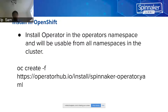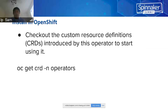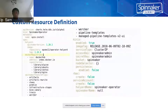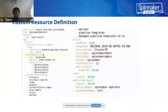All you need is to call `oc create -f` and specify the Spinnaker Operator YAML file. You also have the custom resource definition, the CRD, which is introduced by the operator. When you run `oc get crd -n operators`, you will see the corresponding CRD. This is an example CRD definition, and you can see the corresponding Spinnaker feature flags, which are used to identify what features in Spinnaker you want to include for the installation.